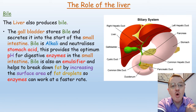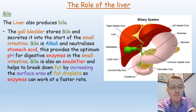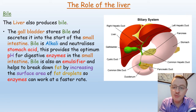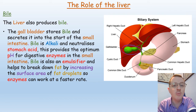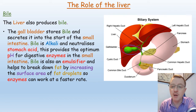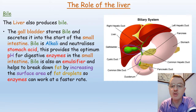The liver also produces bile, and that bile gets stored in this little organ here called the gall bladder. The gall bladder will then secrete the bile into the start of the small intestine, an area known as the duodenum.